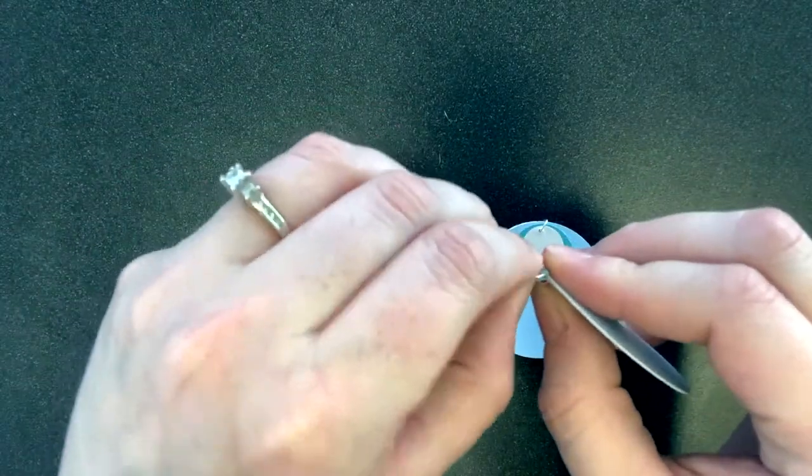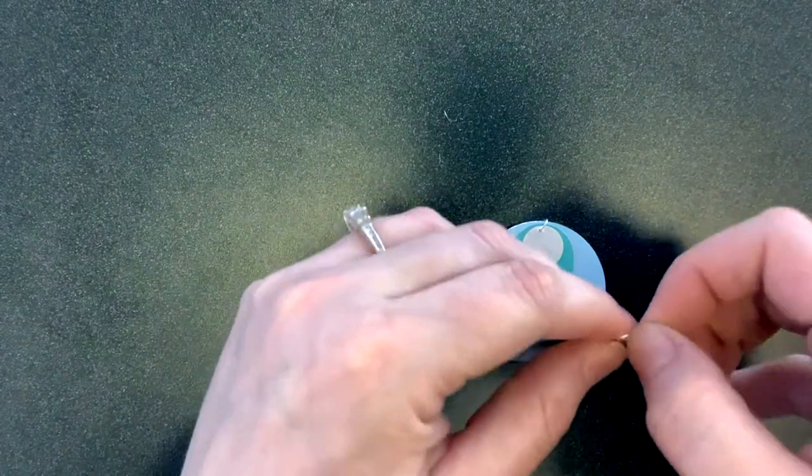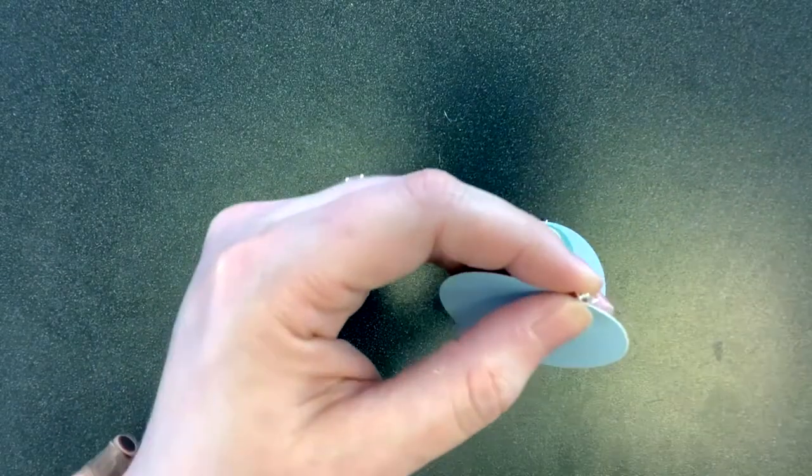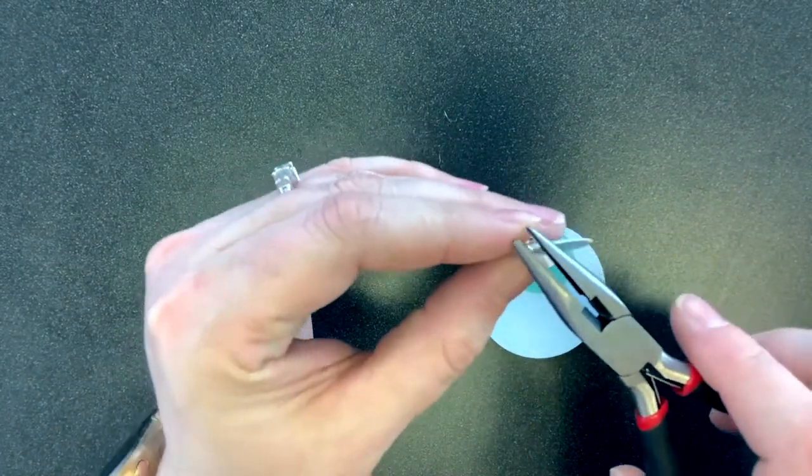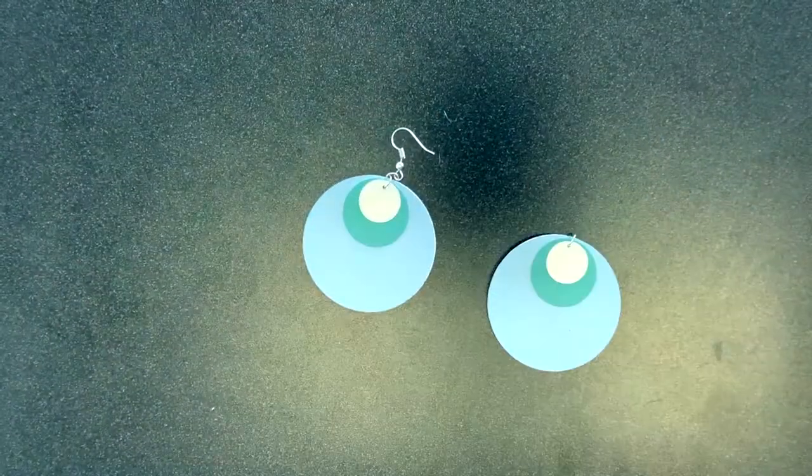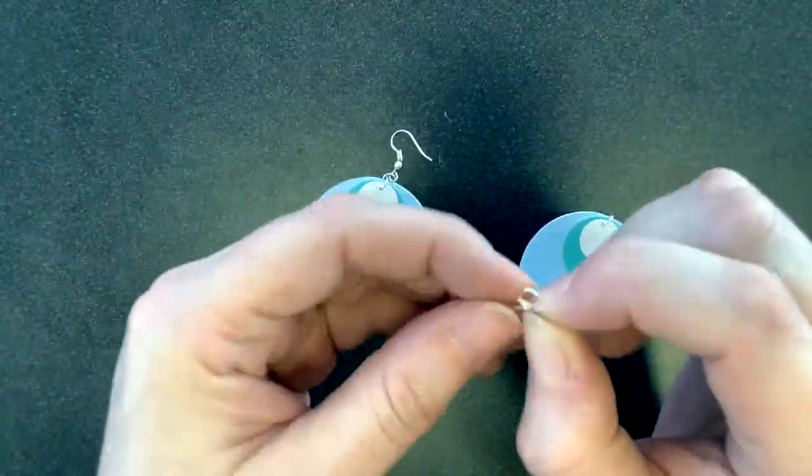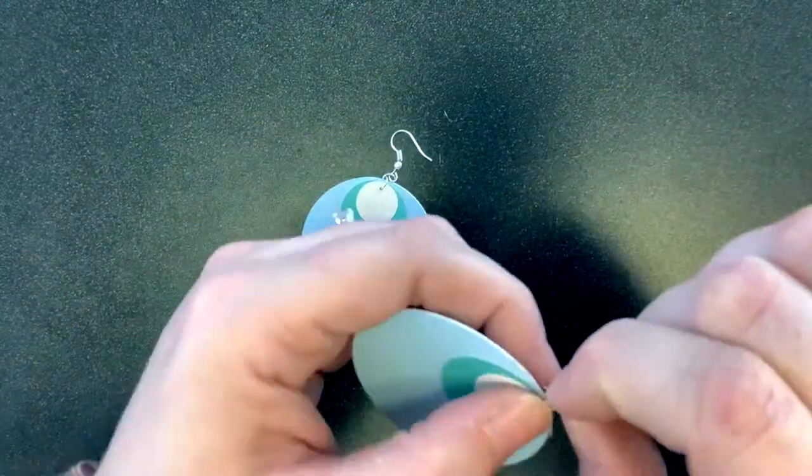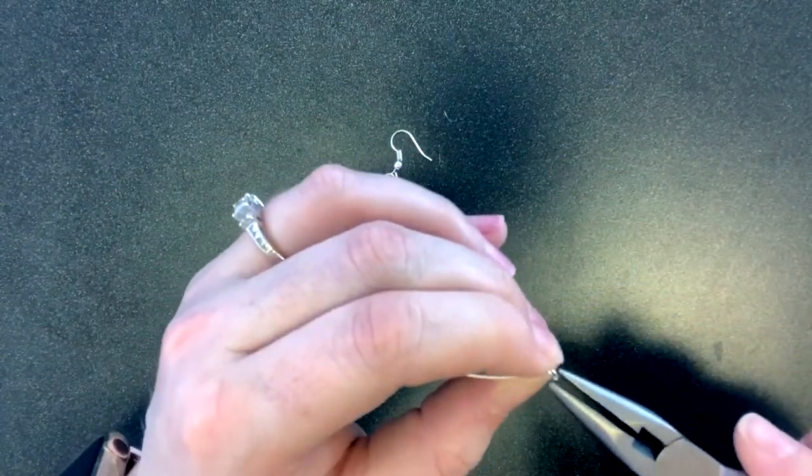Now attach another jump ring to the first earring hook and the jump ring that you've already put on the earring. Close it up and you've got your first completed earring. Repeat all of this for the second earring and you're done!